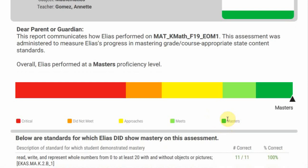Now essentially a master's would be an A, meets would be a B, approaches would be a C, orange would be a D, and an F would be critical.